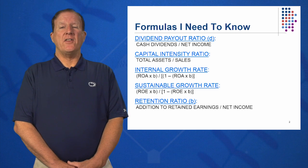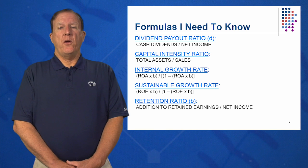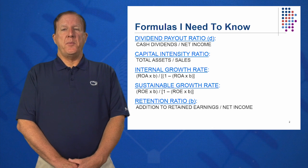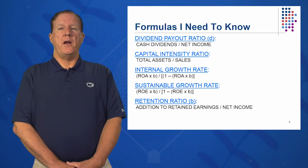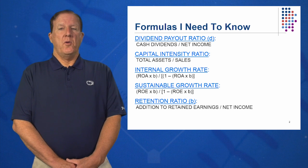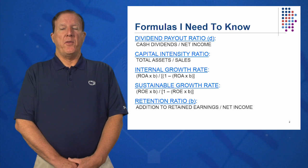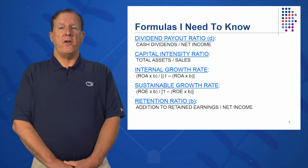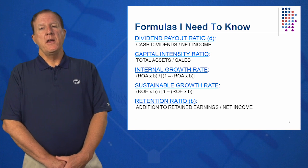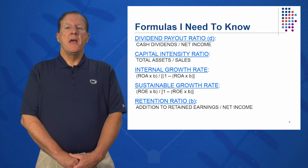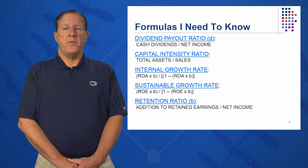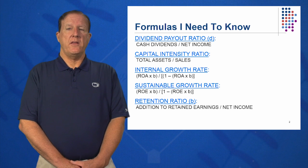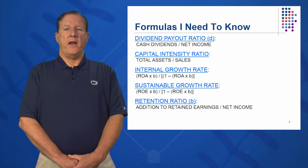Two key ratios address how fast you can grow your company. The internal growth rate is the rate at which I can grow without any external financing whatsoever — no plug. It's (ROA × B) divided by (1 minus ROA × B). The sustainable growth rate is how fast I can grow without any equity financing, while maintaining my debt-to-equity ratio. It's (ROE × B) divided by (1 minus ROE × B). PEMDAS — order of operations — is critical here. Use parentheses carefully to ensure you get the correct internal and sustainable growth rates.